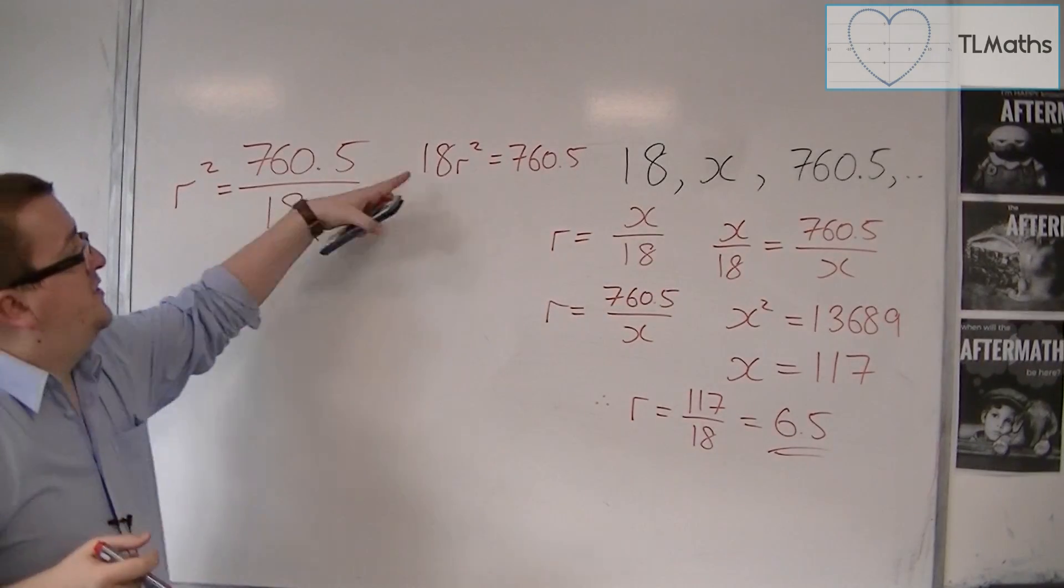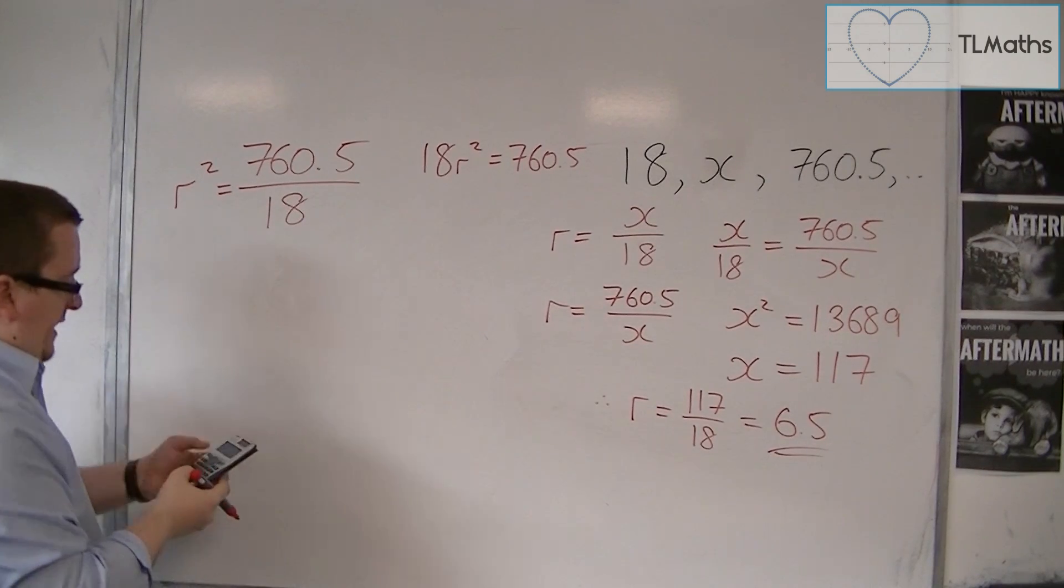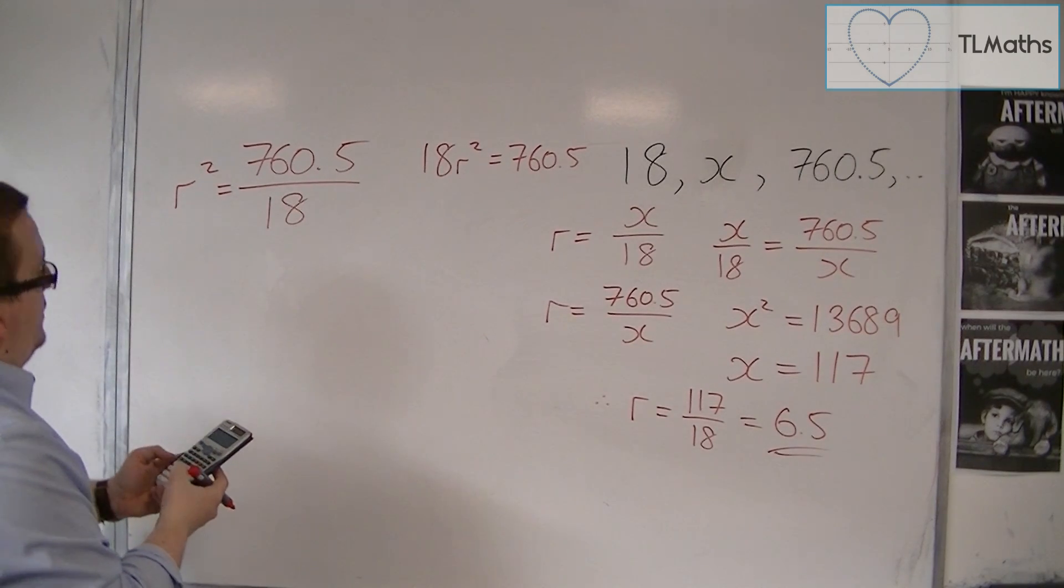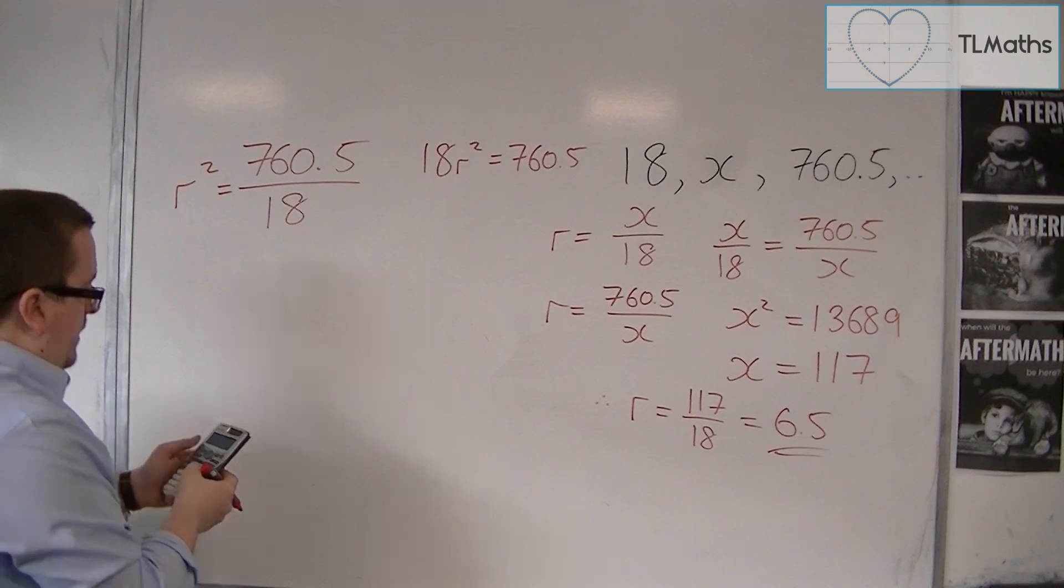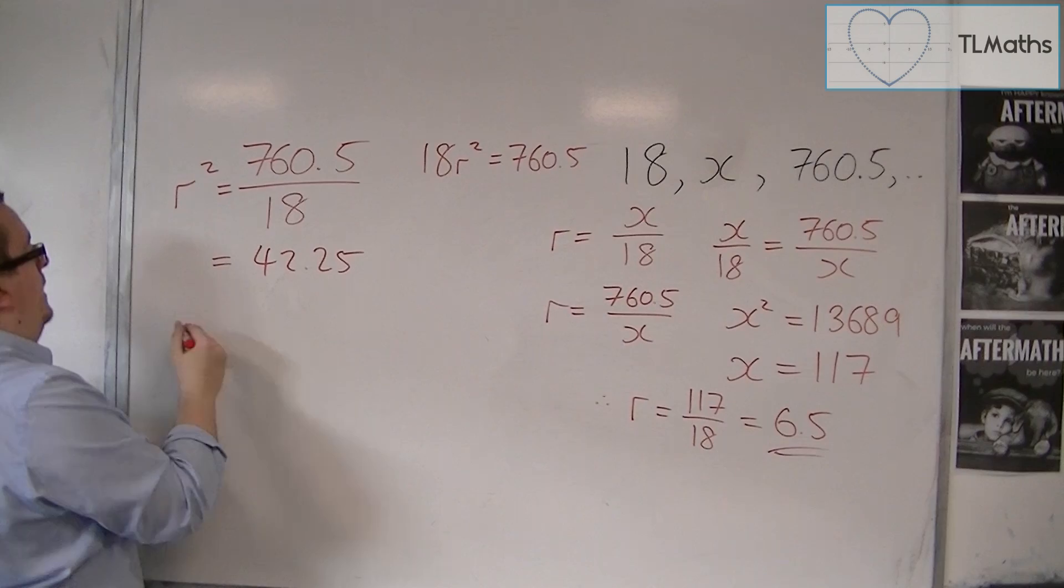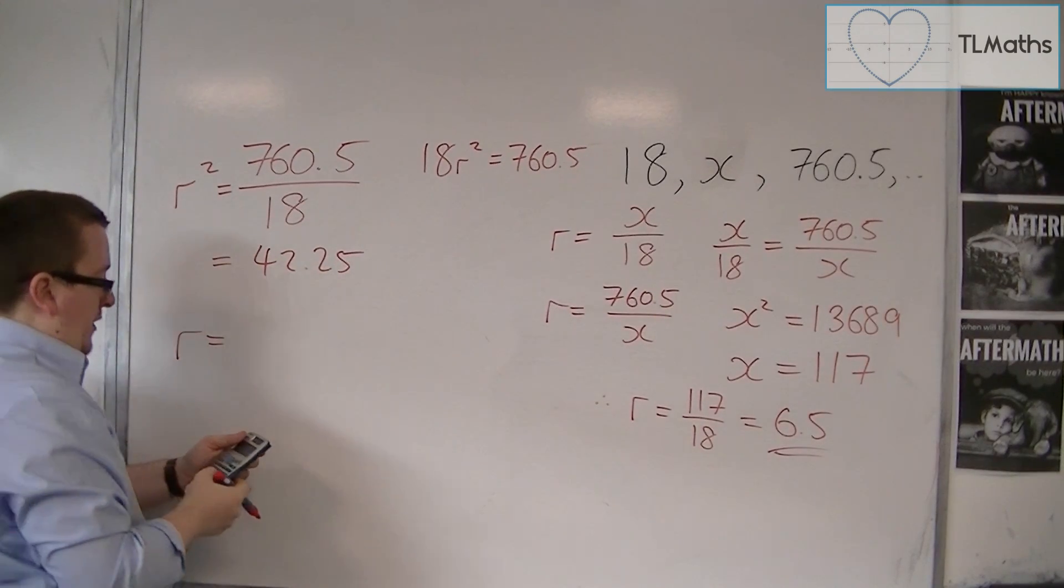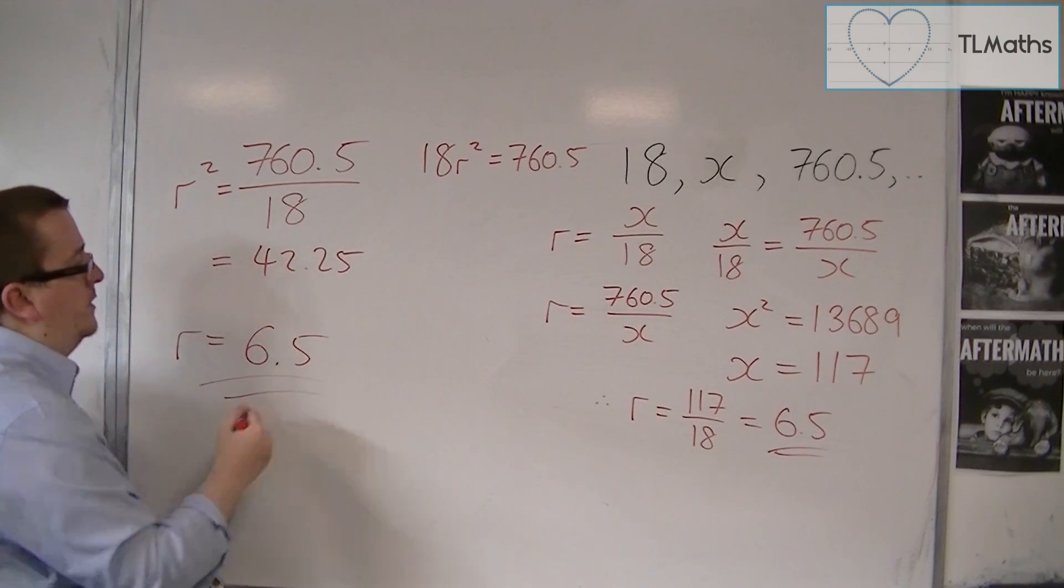So what I've done is I've effectively just divided both sides by 18. And so 760.5 divided by 18 is 42.25. And so r is the square root of that, which gets you the 6.5.